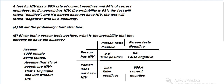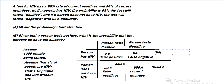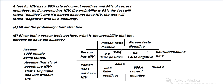So if we convert that to probabilities: 950.4 out of 1,000 is 95.04%, and then 3.96%. And that's 0.02% for the false negative, and 0.98% for the true positive.